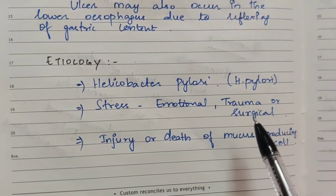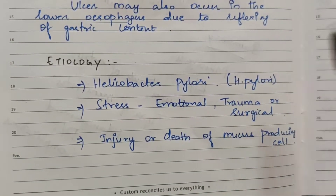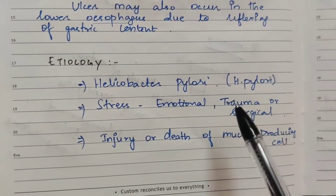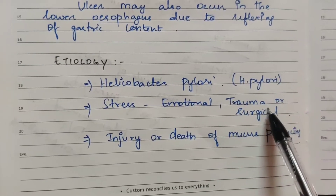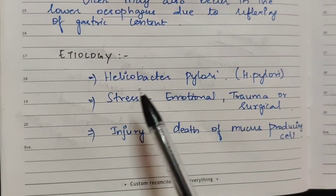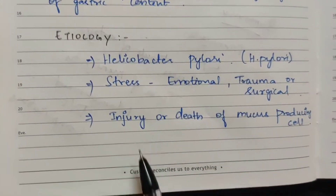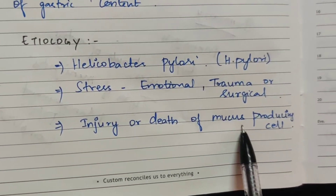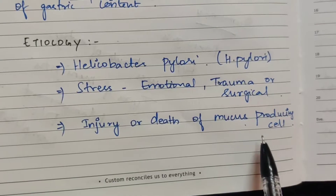Emotional, trauma, or surgical stress can be a cause. Injury or death of mucus-producing cells means the surrounding mucosal layer will be easily affected.